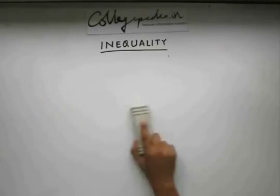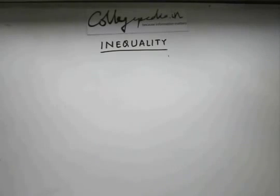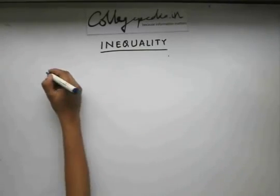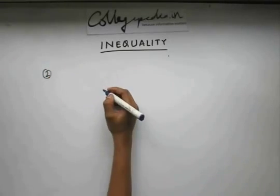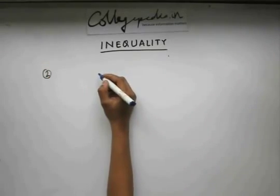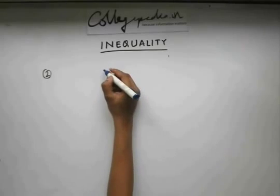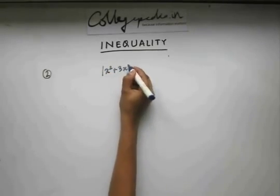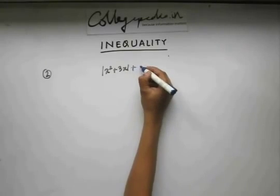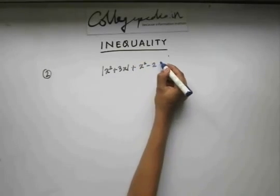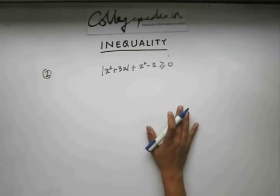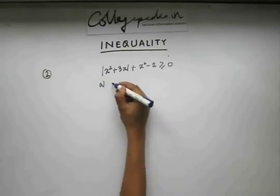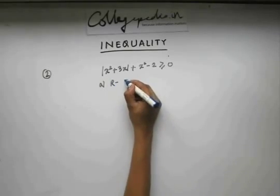Now let's take one last example in this topic and then move on to the next topic. Question 2: find the value of x for which x² + |3x| + x² − 2 ≥ 0.